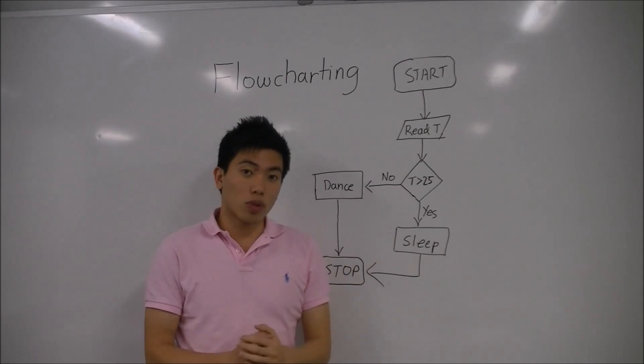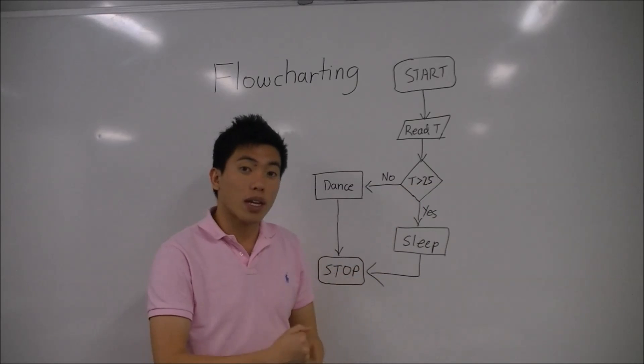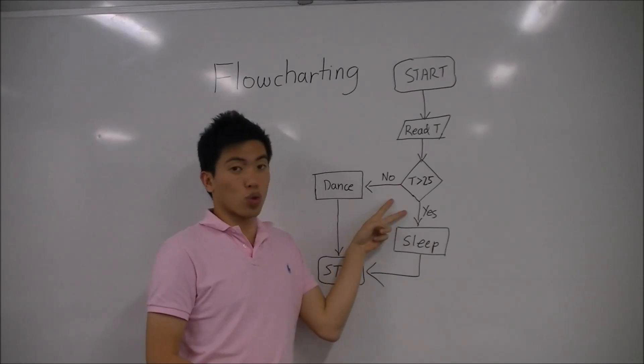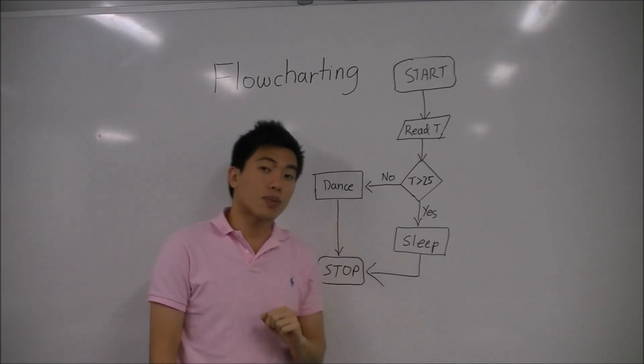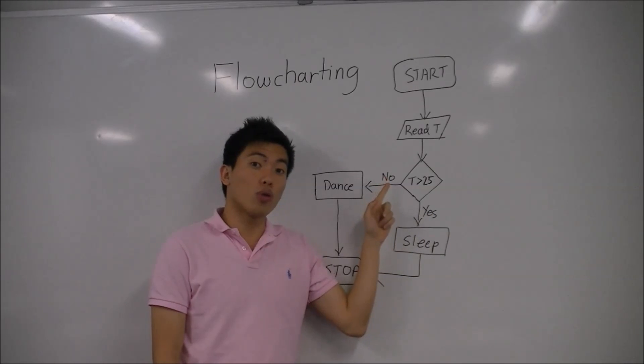After that, you've got your decision blocks, which are diamond shapes. They contain some sort of decision to be made, could be mathematical, could be word-based. They always take one input and give you two outputs. The outputs need to be labelled as either yes, true, or no, false.